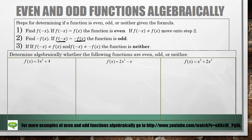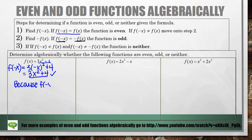Determine algebraically whether the following functions are even, odd, or neither. Let's start with the one on the left. Step 1: find f of negative x — anywhere I see an x, I replace it with negative x. So I get 3 times negative x squared plus 4. Negative x squared is negative x times negative x, which is x squared. So I'm left with 3x squared plus 4. Is this the same as the original function? Yes — because f of negative x equals f of x, this function is even.